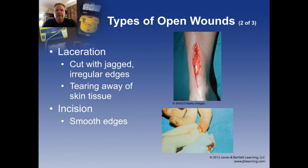In lacerations, you get cuts usually from a blunt force — something strikes your skin and the skin splits open. It's a cut with a jagged or irregular edge, basically tearing open the skin tissue, as opposed to an incision, which is made with a sharp object like a knife, piece of glass, or piece of metal. In surgery, we use scalpels to make incisions. Those are much cleaner wounds — the edges are regular and linear, with less destruction of tissue around the wound.